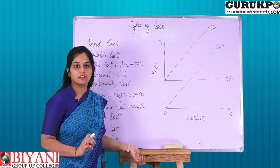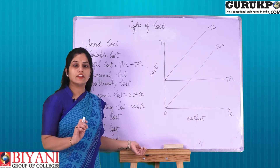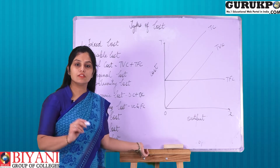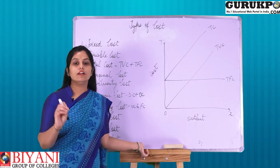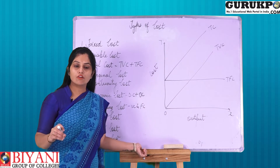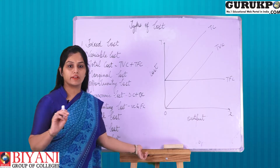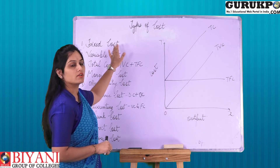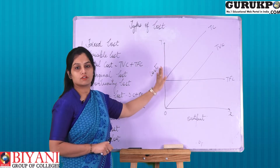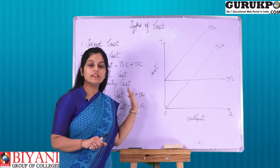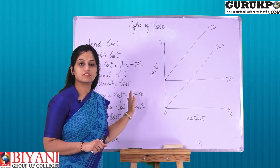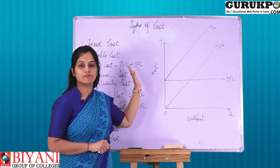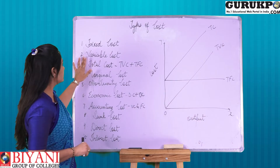For example, the rent of the land or rent of the building — whether the owner or the producer is producing zero products, 10 products, or n number of products, he has to pay the fixed cost whether production is there or not. That means these costs are fixed whether the production is zero or n number of products.